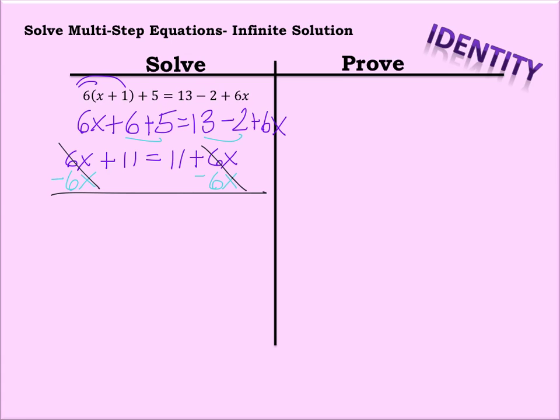So in this case, we just have 11 equals 11, which in this case is a true statement. So unlike the previous example where we had our variable terms disappear and we were left with a false statement, in this case we have a true statement, or true equality.